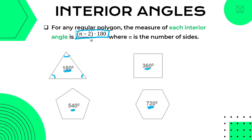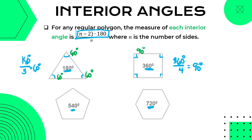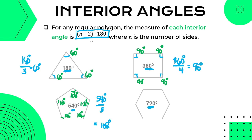For a triangle, 180 divided by 3 means each angle measures 60 degrees. For a quadrilateral, 360 divided by 4 means each angle measures 90 degrees. For a pentagon, 540 divided by 5 means each interior angle measures 108 degrees. You can double-check: 108 times 5 must be 540 degrees.